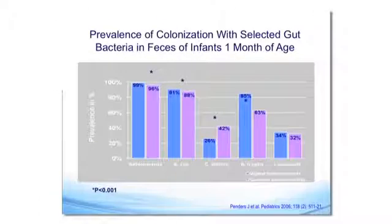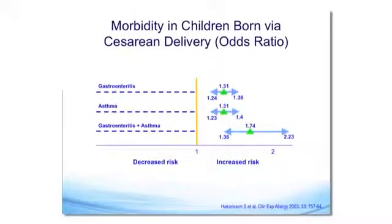To illustrate, there are differences between infants born vaginally, shown in the blue columns, versus infants born by cesarean section. If you look at the consequences — and again, we make a huge leap of faith here as to what these relationships are — but they start becoming very close.